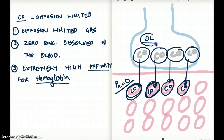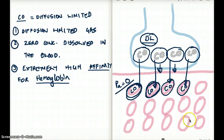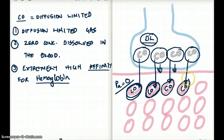That's why it's diffusion-limited — there is less diffusion. If there was more carbon monoxide, more of it would bind to the RBCs. And if there was less blood going to the alveolus, that would be a perfusion problem because there would be less blood flow. But in this case, there is less gas flow. As a result, this is diffusion-limited. And because it has such high affinity for the RBCs, none of it gets dissolved in the plasma.